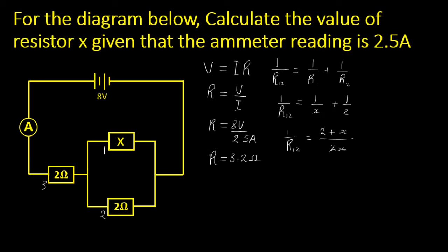2 times 1, that's just a 2, plus 2 into 2x is x. Then at this stage we can cross multiply so that R₁₂ open bracket (2 + x) equals 2x. So if we make R₁₂ the subject of the formula, then R₁₂ equals 2x/(2 + x).